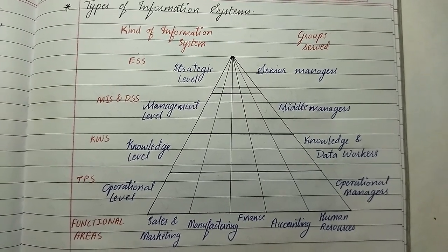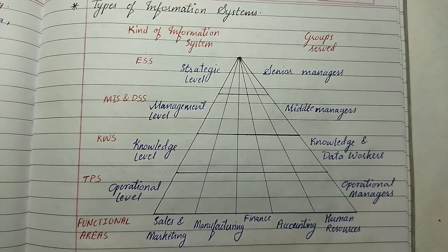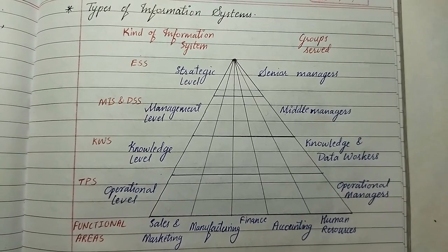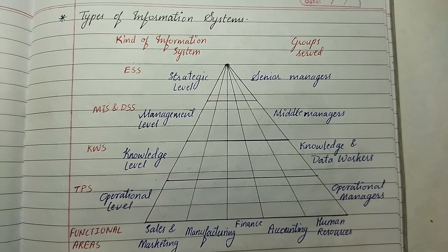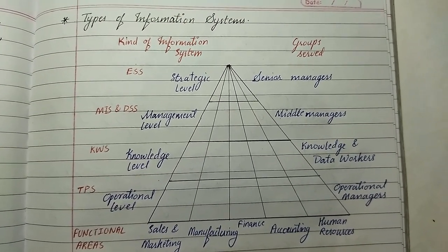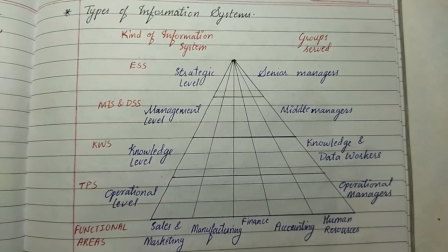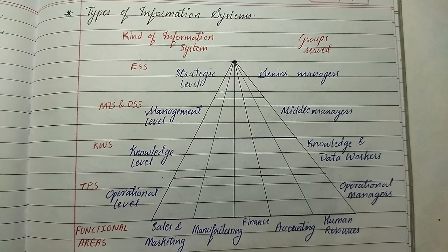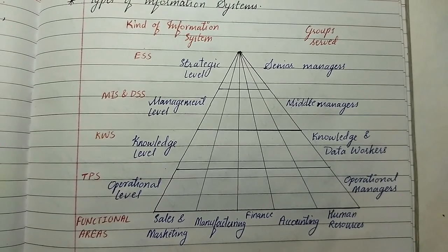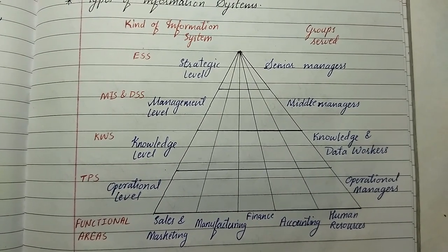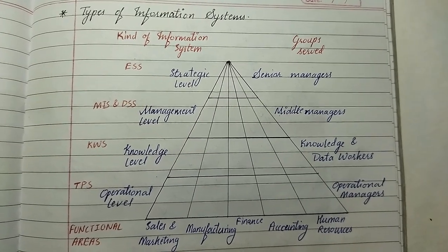In the diagram, the left side represents kinds of information systems: TPS, KWS, MIS, DSS, and ESS, each at different levels — TPS for operational level, KWS for knowledge level, MIS and DSS at management level, and ESS at strategic level. On the right side are groups served: senior managers at strategic level, middle managers at management level, knowledge and data workers at knowledge level, and operational managers at operational level. At the bottom are functional areas: sales and marketing, manufacturing, finance, accounting, and human resources.